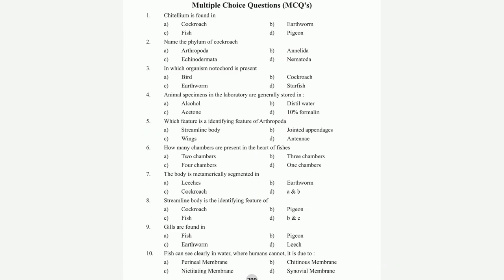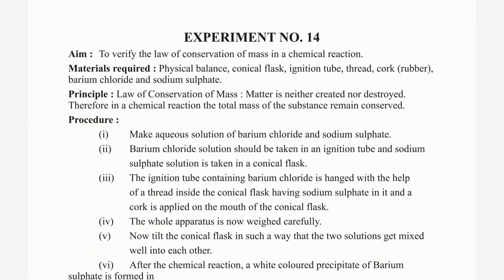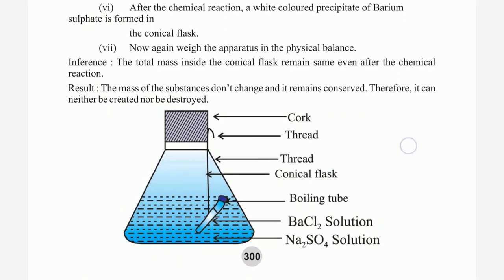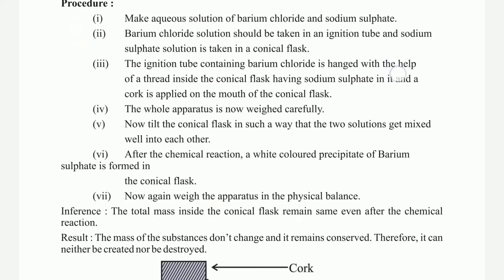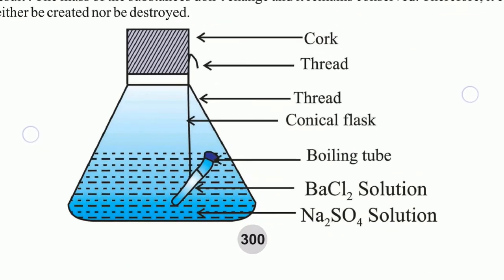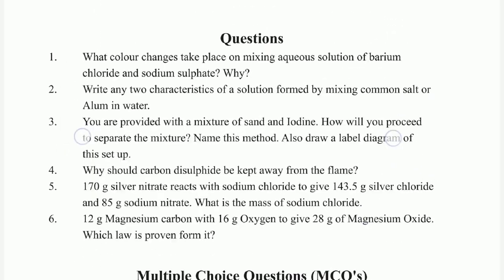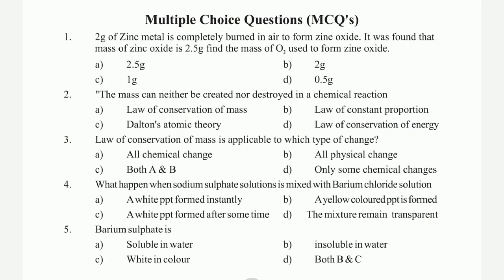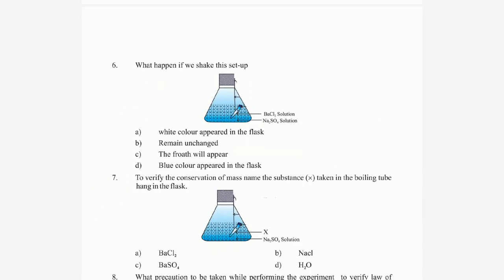MCQs for experiment 13 — 10 questions. Then experiment number 14: to verify the law of conservation of mass in a chemical reaction. Material required includes cork, thread, conical flask, boiling tube, BaCl₂ solution, and Na₂SO₄ solution. MCQ: why does color change take place on mixing BaCl₂ solution with Na₂SO₄? Six questions on the law of conservation of mass.